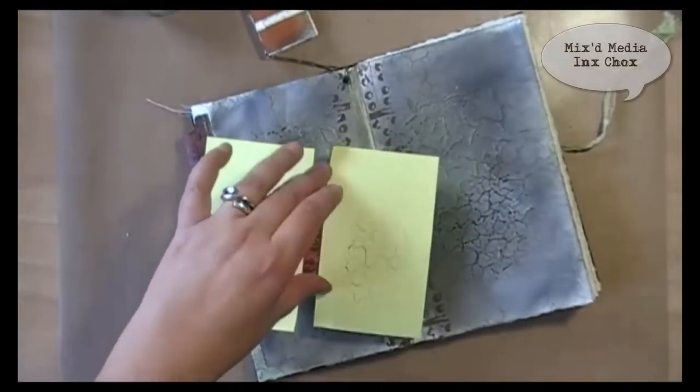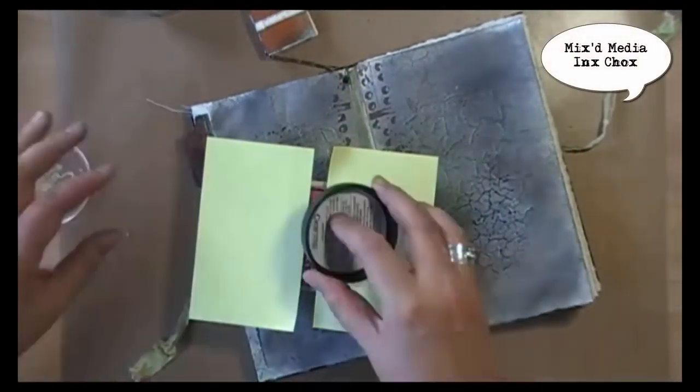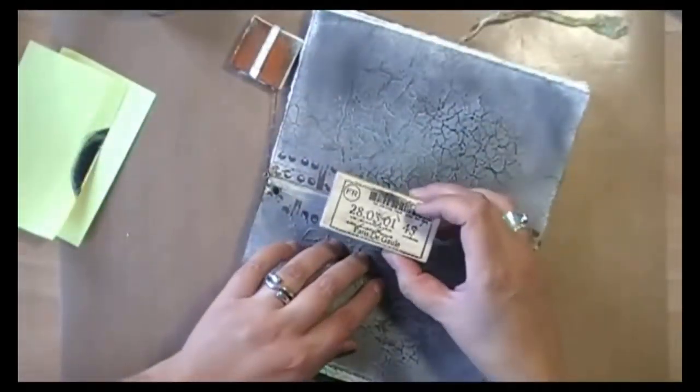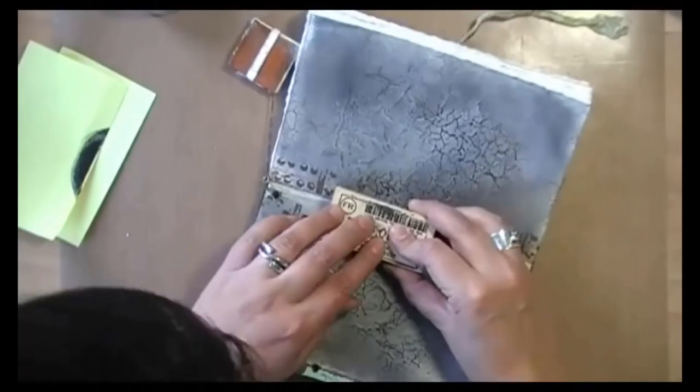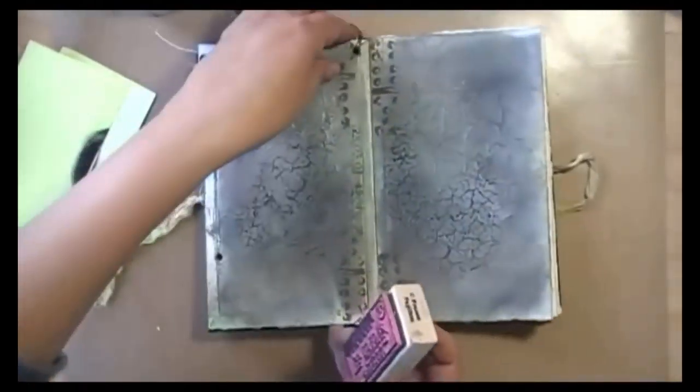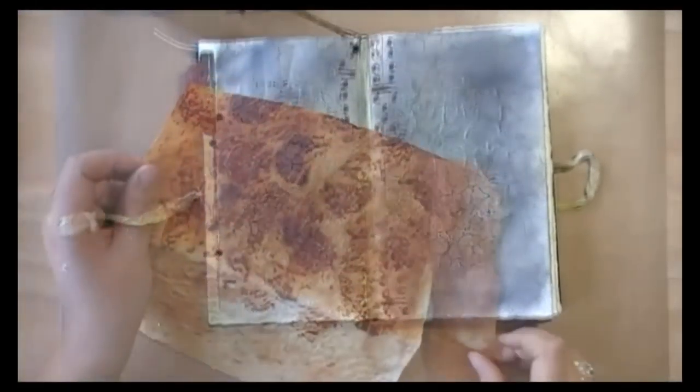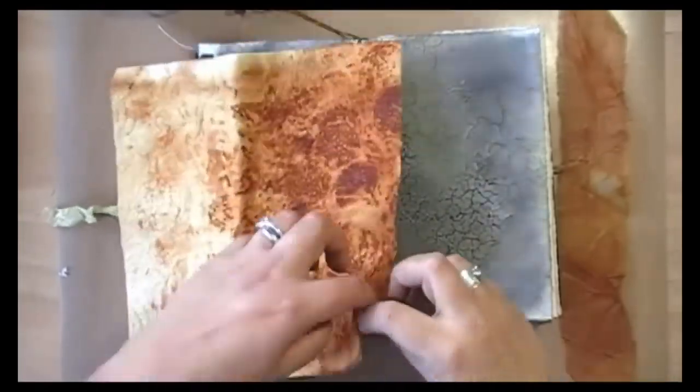I want to add some more stamping. So I'm taking another one of my Stampatique stamps. This is my Ticket to Paris. And I just want to add those numbers, right where it's the hardest to stamp. Why make it easy on yourself. And now I can go for my focal element.